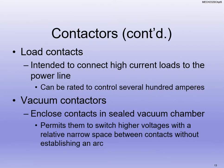With load contacts, we intend to connect higher current loads to a power line using a smaller control voltage. It's the same concept as when we used Arduino boards to do blinking lights — we ran a separate relay because our lights ran on 12 volts and our controls on 5 volts from the Arduino board. So we use a smaller control voltage, like 24 volts from our PLC, to control higher voltage loads.